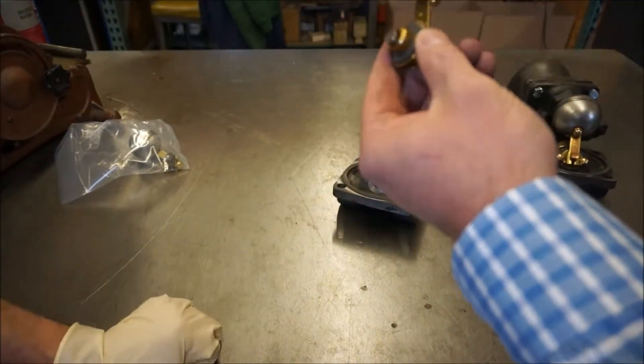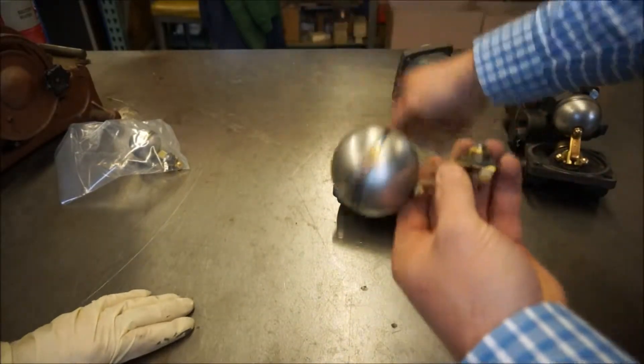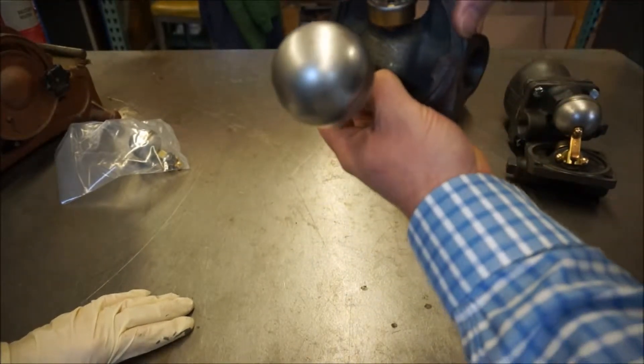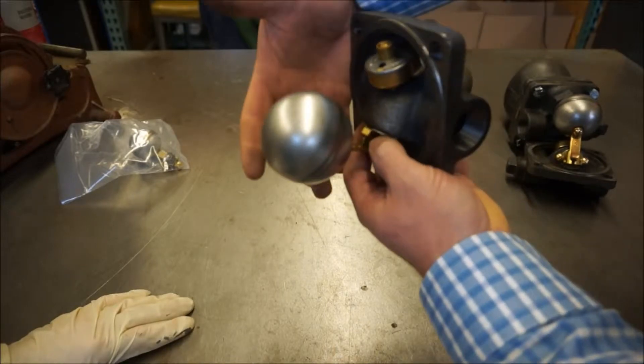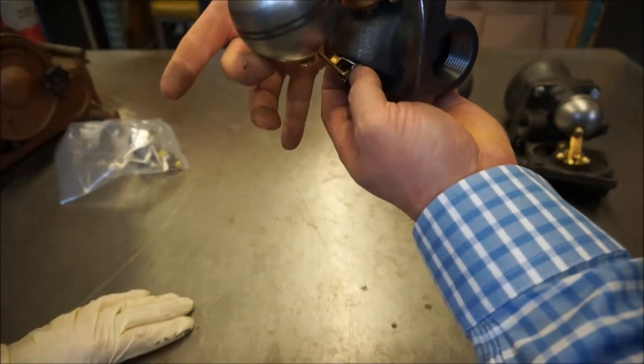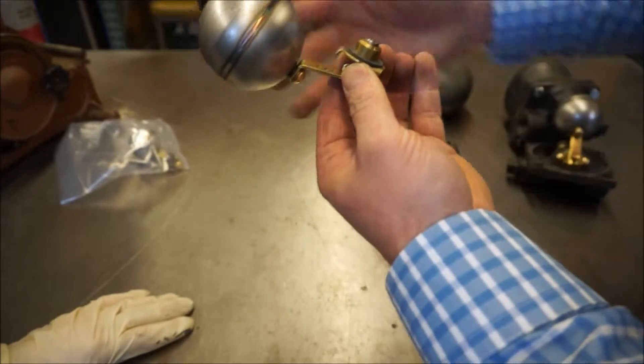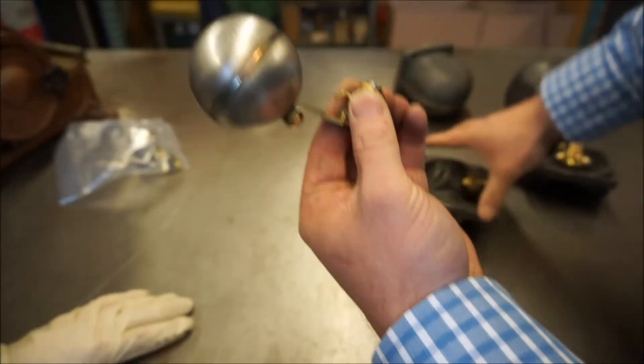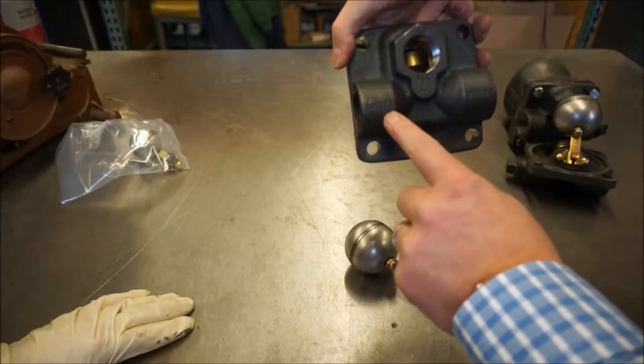The float with the seat and the plug screw in here. And when the trap fills up with condensate, it floats the float, which then opens the seat and allows the condensate to flow out the outlet.